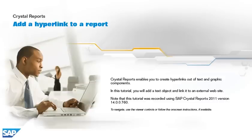Crystal Reports enables you to create hyperlinks out of text and graphic components. In this tutorial, you will add a text object and link it to an external website. Note that this tutorial was recorded using SAP Crystal Reports 2011, version 14.0.0.760. To navigate, use the viewer controls or follow the on-screen instructions, if available.